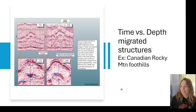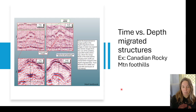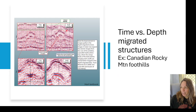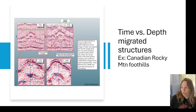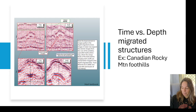Here's another example from the Canadian Rockies comparing time migrated versus depth migrated data. Zooming into the area of interest we can notice clear differences in the structure. In the time migrated data this lower doming-looking feature appears very flat, but in the depth migrated data it actually does have that structure — which is important to keep in mind if we're interested in finding structural highs for hydrocarbon accumulation.